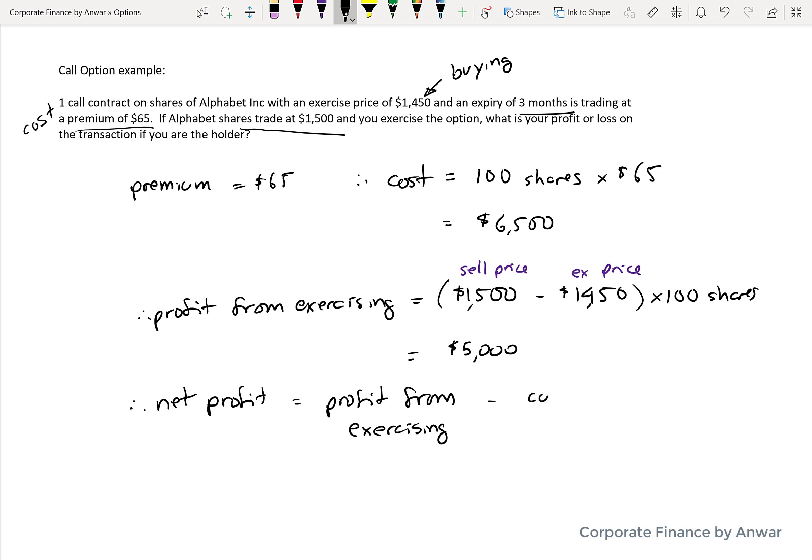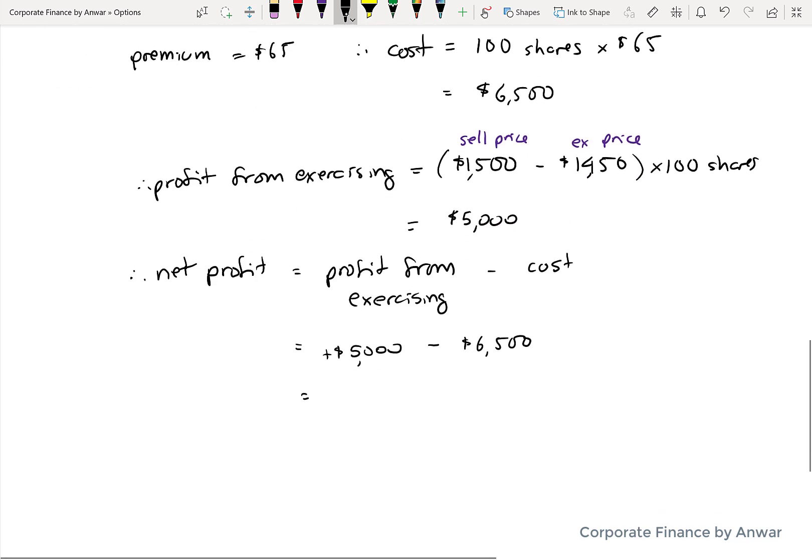Minus your cost. As we just calculated, the profit was $5,000 and the cost was $6,500. So in this case the holder has a loss of $1,500 on this whole transaction. And the important thing to remember is that this is a transaction between two parties.